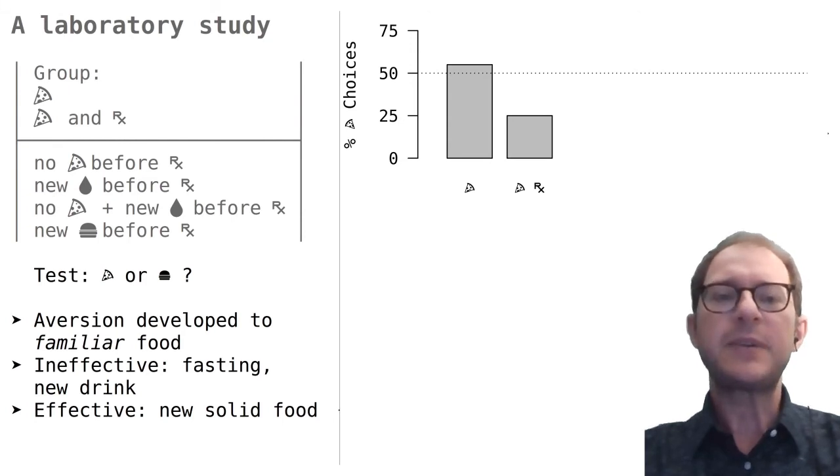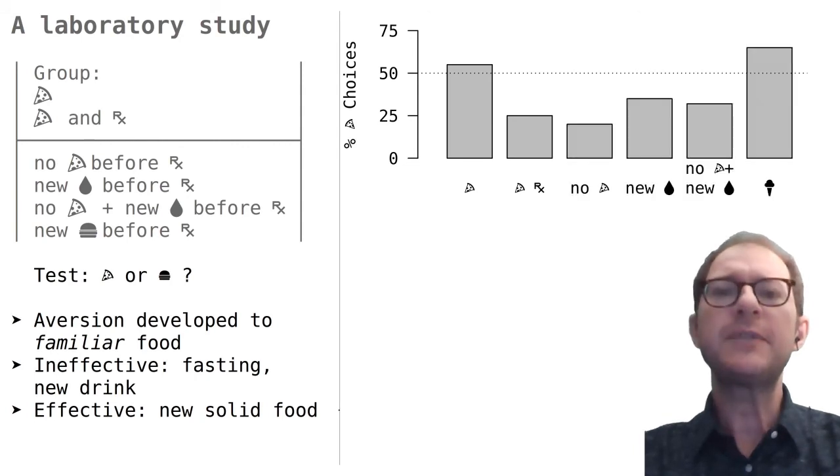Lastly, some rats were given the food that would be used during the choice test. The result from these groups was that only the last one, which ate a new solid food before getting sick, did not develop the aversion to the regular diet. All of the others developed as strong an aversion as the experimental group. So neither fasting nor the new drink protected the usual diet from being the target of the aversion. It was later discovered that aversions conditioned most easily to food containing proteins, which explains why the drink did not work.